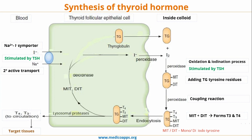The MIT and DIT are, with the help of deiodinase, converted back into tyrosine molecules, and the tyrosine molecules again combine together to form the thyroglobulin molecule. So this is the process of synthesis of thyroid hormone.